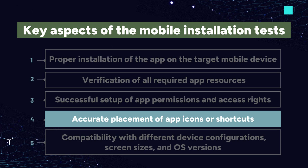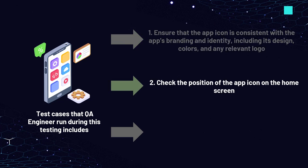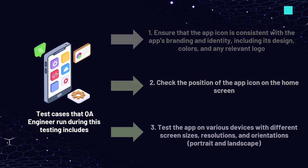The next key aspect to test during mobile installation is accurate placement of app icons or shortcuts on the device's home screen. Test cases include: ensuring the app icon is consistent with the app's branding including its design, colors, and logo; checking the position of the app icon on the home screen — it should be easy to locate and access; and testing the app on various devices with different screen sizes, resolutions, and orientations (portrait and landscape) to confirm the icon placement adapts to different device configurations.